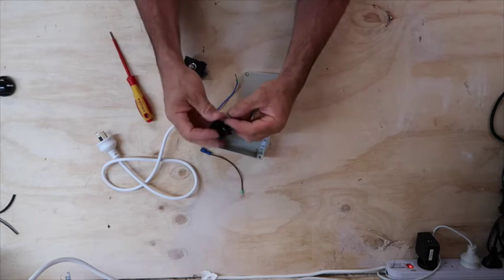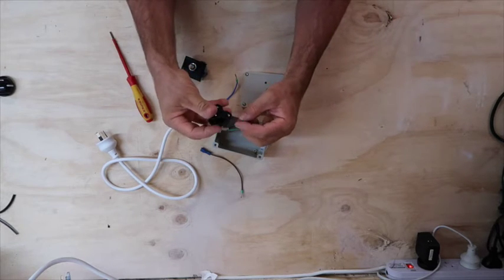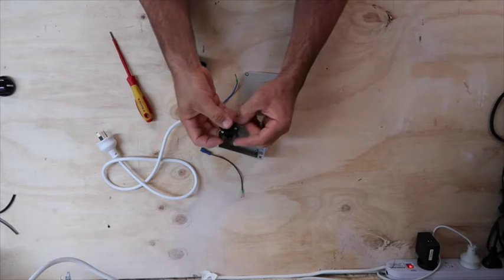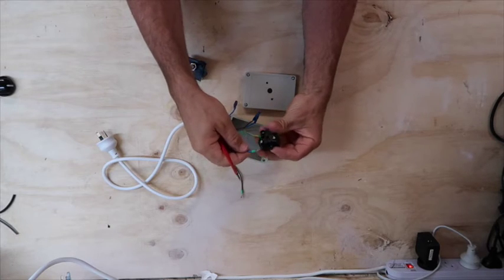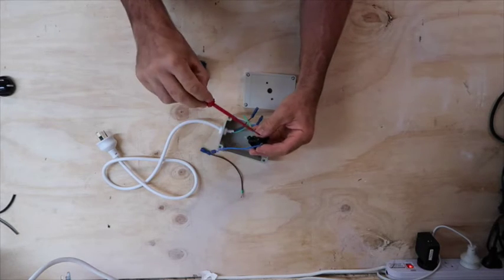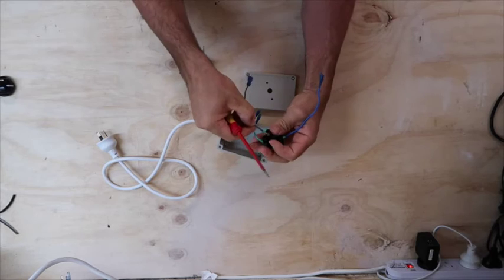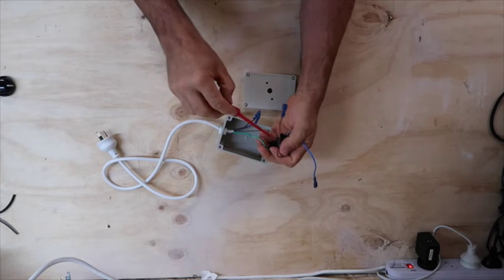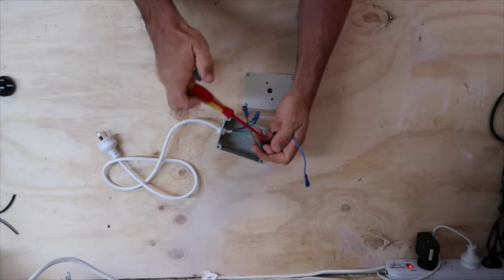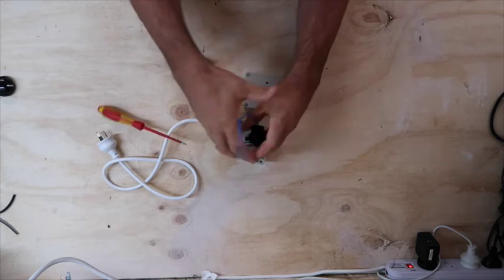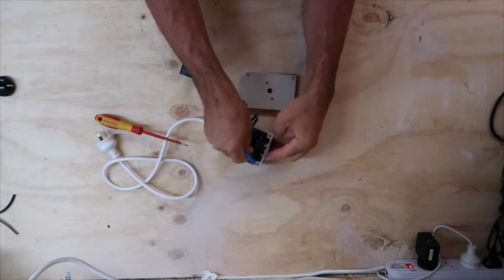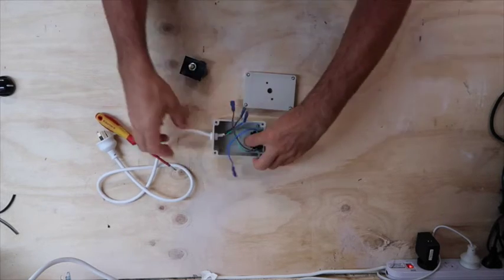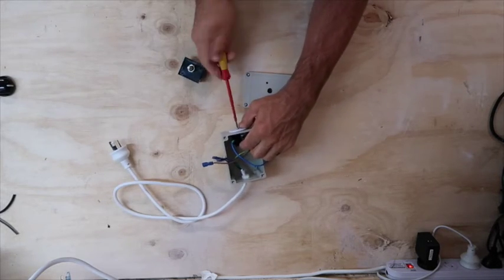So we'll attach these cables now, and screw the terminal on the back of the powerpoint. So the earth goes straight through, then blue goes to neutral. The brown goes to active. And that screws onto the back of the fitting.